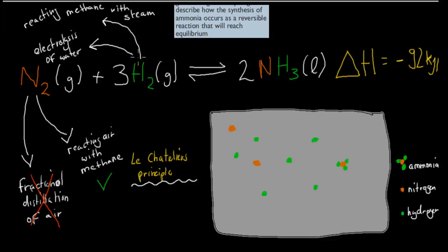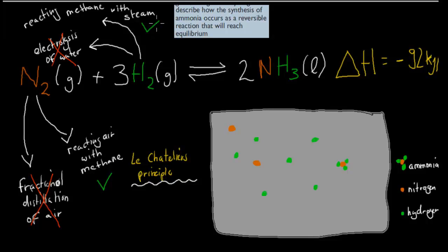We also talked about how we can make hydrogen gas. The electrolysis of water was one way, but that's not something we usually do because it's a bit too expensive as well. The common way to get hydrogen gas is the reaction of methane with steam — that's the more common way.